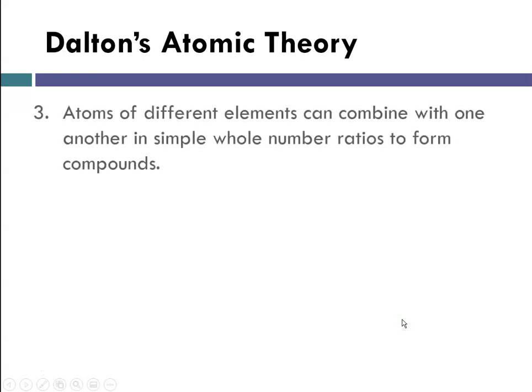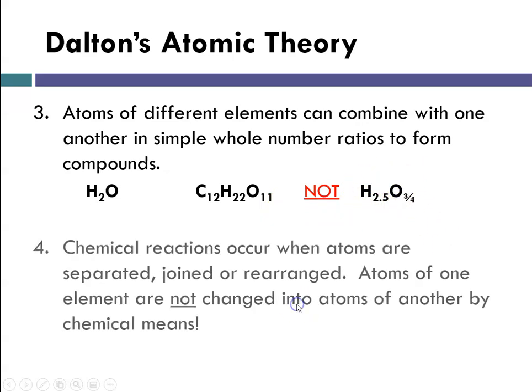He also said that atoms of different elements can combine with one another, and when they combine, they do so in simple whole number ratios to form compounds. For instance, water and sucrose, these are all whole numbers. You'll never see H 2.5 O 3/4, it's always whole number ratios.